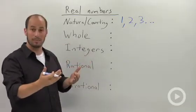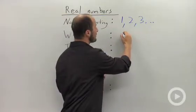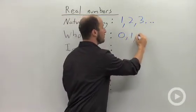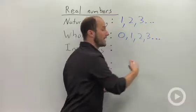Whole numbers include 0. So basically, a whole number is a counting number plus 0, and they continue upward as well.